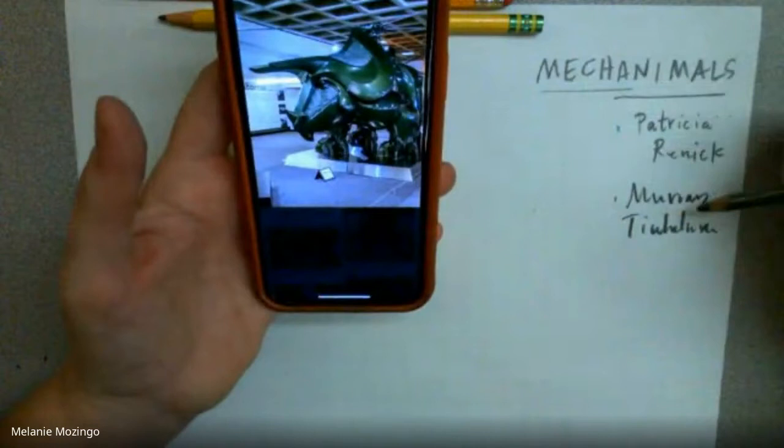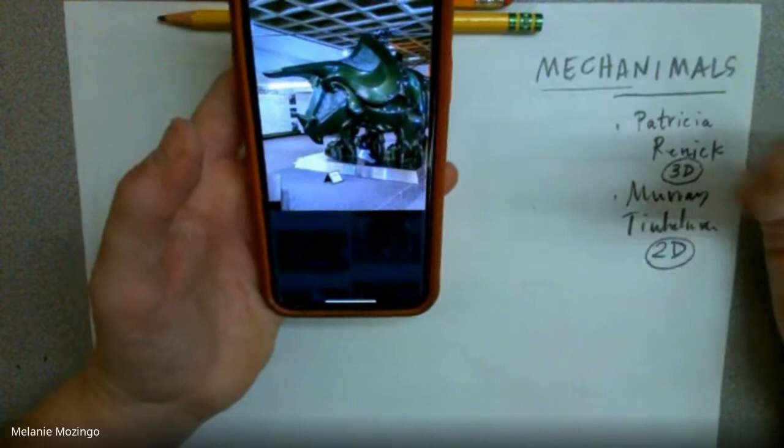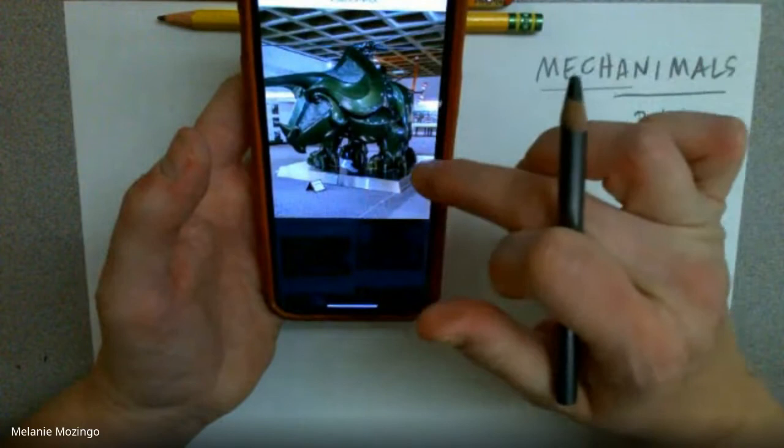Murray Tinkleman's work was 2D, so he did drawings. Patricia Rennick, though, showed work that was 3D, three-dimensional. It has form. You can see it from the top, the side, and the bottom.